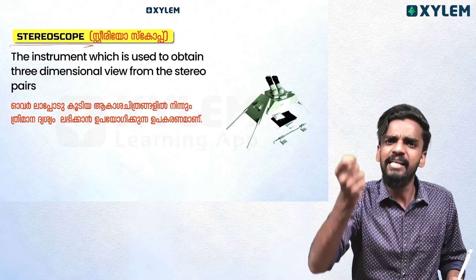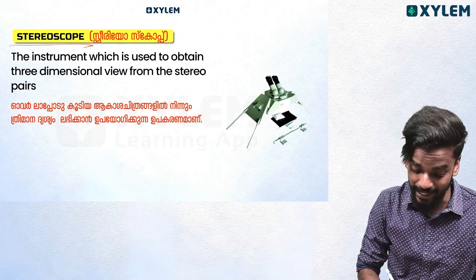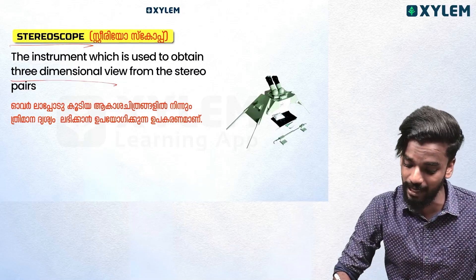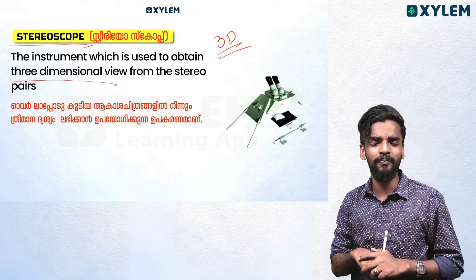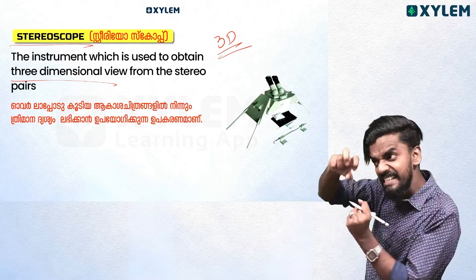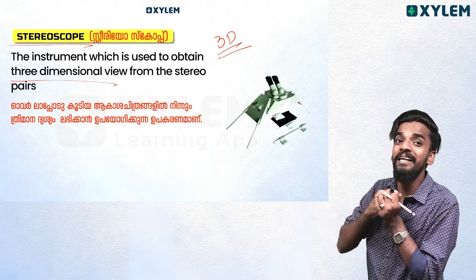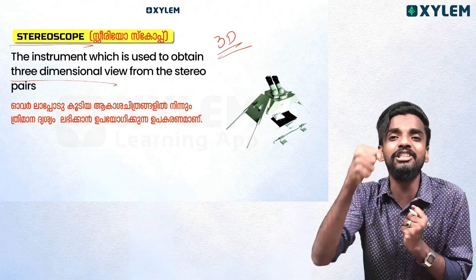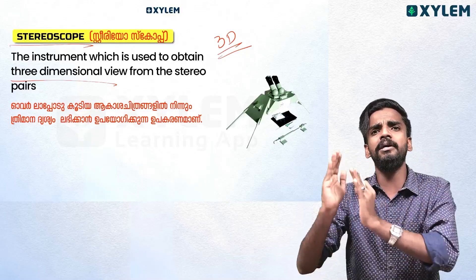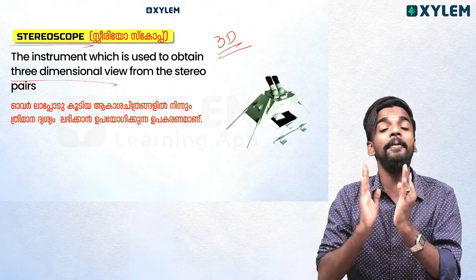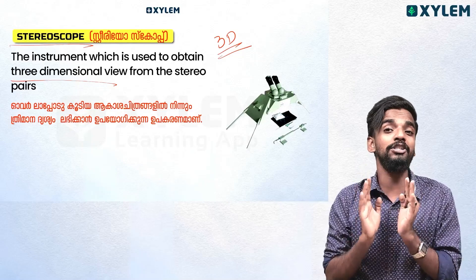Stereo Pair and Stereo Scope — we have a 3D picture from our stereo pair. A stereo pair consists of two adjoining photographs with areas of overlap. Using a stereoscope, we can view a 3D picture.